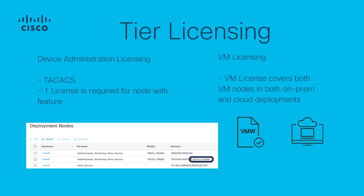The device administration licenses are counted depending upon the number of PSNs from where you enabled the device admin service. Hence, you will need to get a number of licenses matching the number of nodes with these services enabled. The VM license covers the Cisco ISE VM nodes in both on-prem and cloud deployments. If a virtual appliance is used but your Cisco ISE does not have an active VM license, you will receive warnings and notifications of non-compliance until you procure and install a VM license.